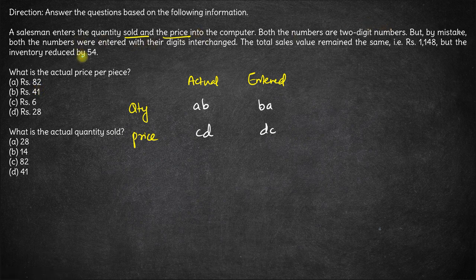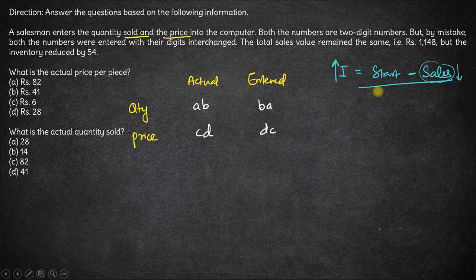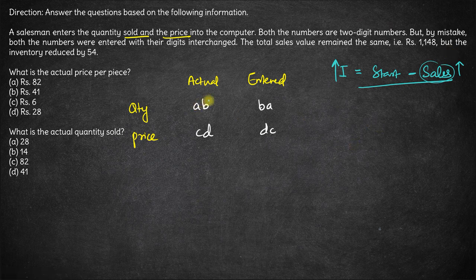What is given is that the inventory reduced by 54. Why was the inventory reduced? Inventory is basically the starting amount of quantity you had minus the number of units you sell — sales quantity sold. So if the entered inventory reduced because of this mistake, the amount of sales entered in the computer must be higher. That's why the inventory reduced — the number of units left would be lesser because he entered a higher number of quantities sold. That means the quantity entered is greater than the quantity actually sold.